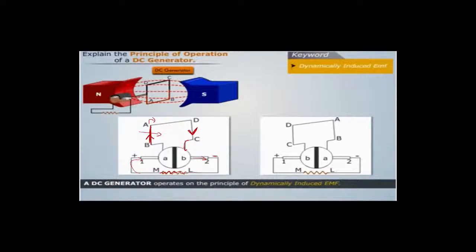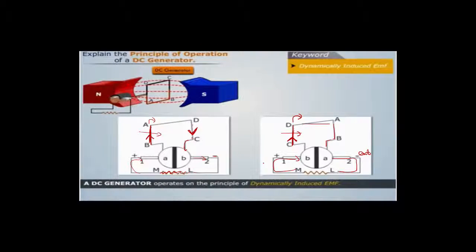We're still turning in the same direction — clockwise. Because this has been going up and the field is still going from north to south, the electrons are still going up. But look what's happened to the direction of electrons in that piece of wire: during the first part, the electrons are going down this side; in the second part, because it's swapped, the electrons are now going up this piece of wire. So even though the thing keeps turning clockwise, the flow of electrons in the external circuit is still continuous.